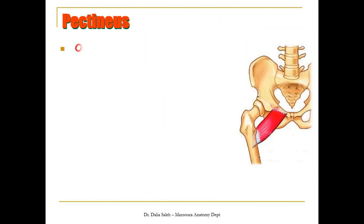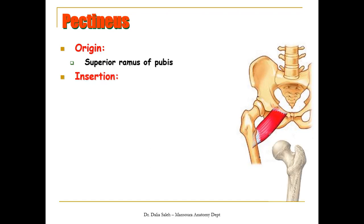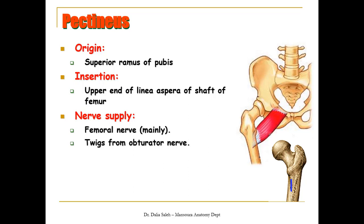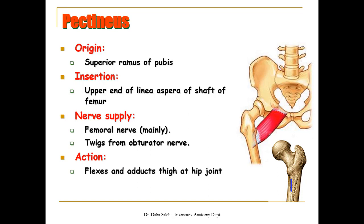The pectineus muscle is a small muscle that extends from the superior ramus of the pubis at the pectineal surface to the pectineal line at the back of the femur. Its nerve supply is mainly from the femoral nerve, and sometimes it receives twigs from the obturator nerve. Its action is weak flexion and adduction of the thigh at the hip joint.